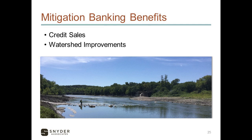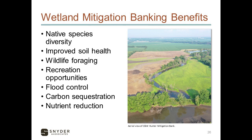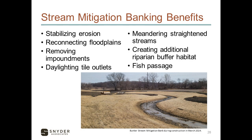I wanted to also mention wetland mitigation bank benefits because they are an important resource protected under the Clean Water Act. Dam removal improves water quality and restores fish passage, but not all stream mitigation banks remove dams. Other improvement examples include stabilizing streams by reconnecting floodplains, adding benches to help with the floodplain connection, daylighting tile outlets within the riparian buffer to improve water quality, re-meandering straightened channels, and establishing riparian buffer along channels that don't have one today — for example, converting a farm field to riparian buffer to filter nutrients before runoff hits the channel.